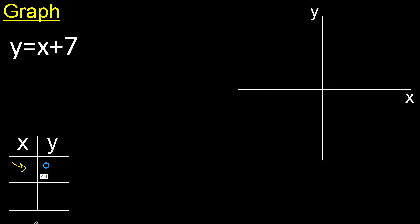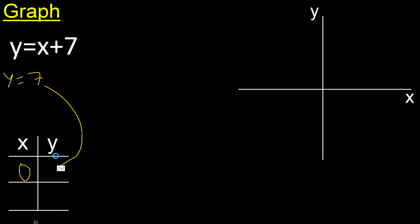Here any number, for example x is 0. Therefore y equals 0 plus 7, which is 7.